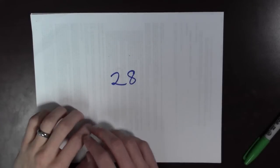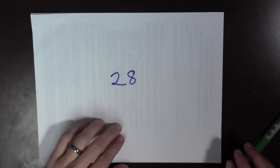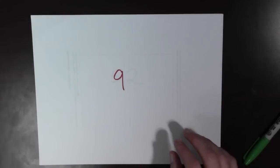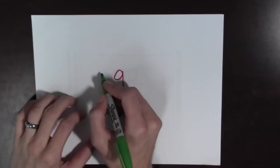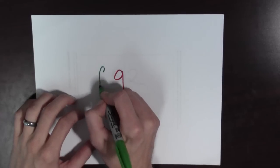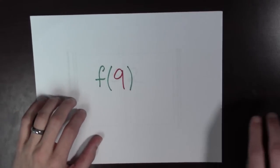That turned into 28 cat years. So, the function mapped three human years to 28 cat years. Let's see this done again. Let's see another example. Now, we have nine human years, and we're going to apply our function. We're going to write f for applying our function, and we're going to hug the nine with the parenthesis, and here we go.